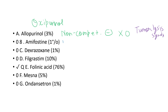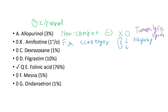Amifostine is a cytoprotective free radical scavenger used to decrease nephrotoxicity associated with platinum-containing agents like cisplatin and oxaliplatin, and alkylating chemotherapeutic agents. It also decreases xerostomia (dry mouth). These are important drugs that frequently appear in USMLE and exam questions.